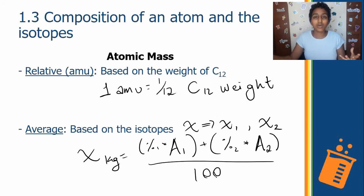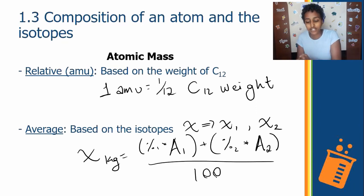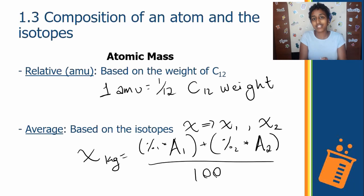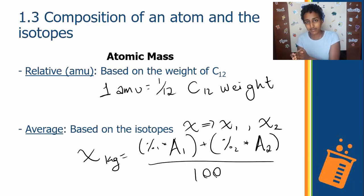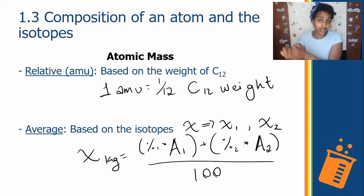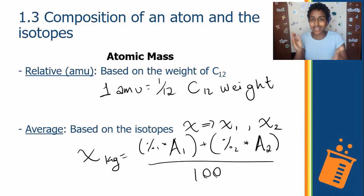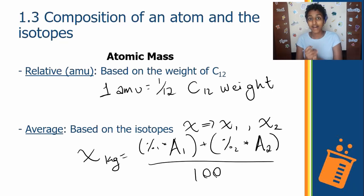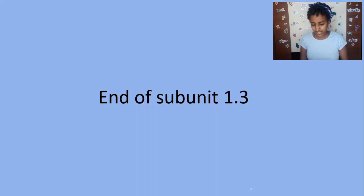That would leave X2 at only 1% abundant. You multiply each percentage by its respective mass number, add the results, and divide by 100. It's just plugging in numbers after that — and that's how you find the average atomic mass of an element.